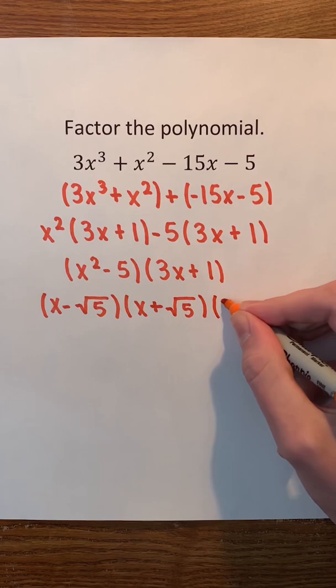Then, we'll just have this other factor of 3x plus 1. Now, we can see that these three factors are the factors of the polynomial.